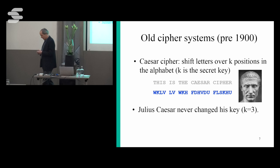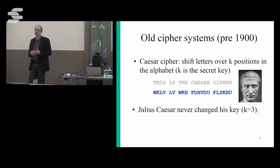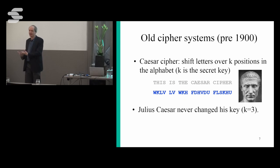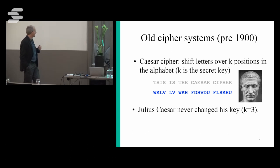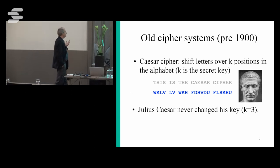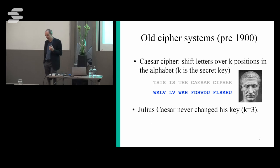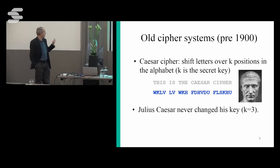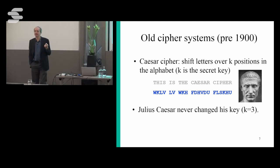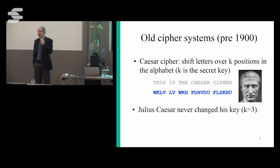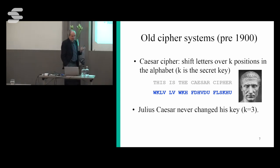Cryptography is as old as writing itself — as soon as people could write, they started encrypting things: Babylonians, Egyptians, Greeks. Old textbooks use the Caesar cipher, a technique used by Julius Caesar: just shift letters in the alphabet, so an A becomes a D and H becomes a K and so on. There is already a very important mistake here — Julius Caesar never changed his key. By the way, there are also mobile operators who give the same key KI to every user, so being sloppy with keys is not a new problem.